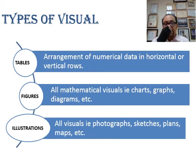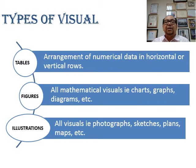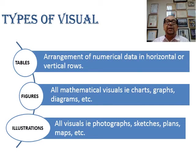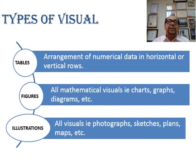Types of visual: we have tables — an arrangement of numerical data, horizontal or vertical. When you're talking about statistics or financial reports, you need tables. For example, we do tables for student attendance. You can see your attendance in the LMS — learning management system. The attendance that we mark, that type of visual, we call it a table or tabulation.